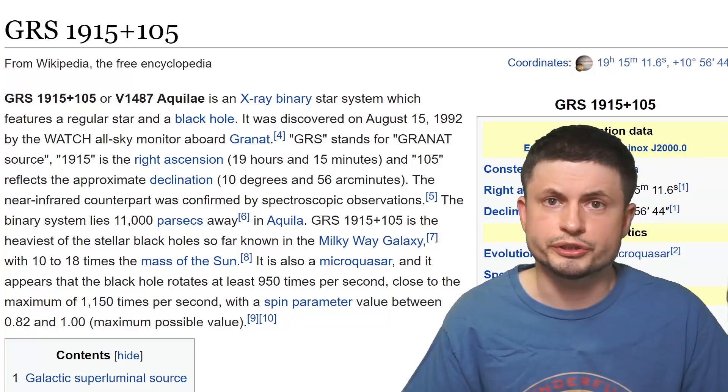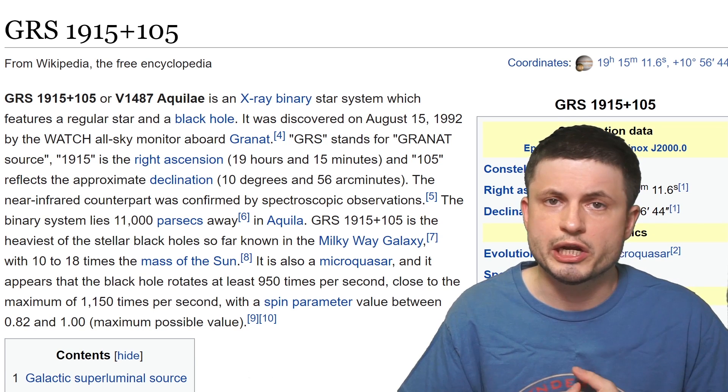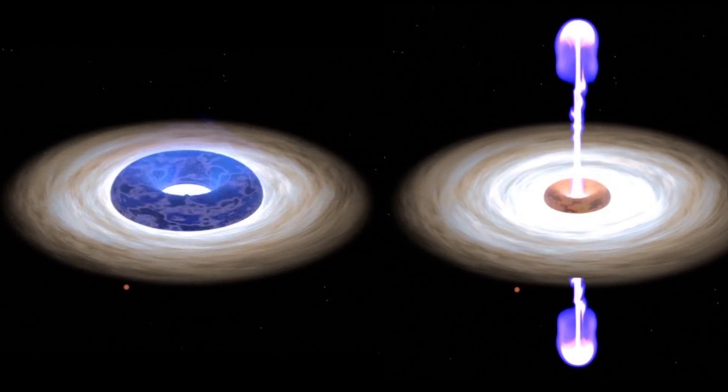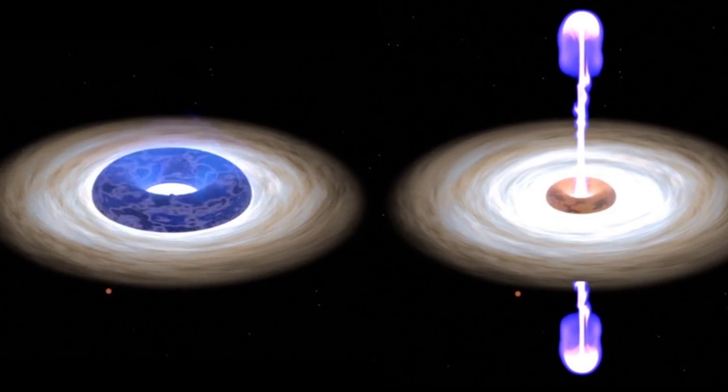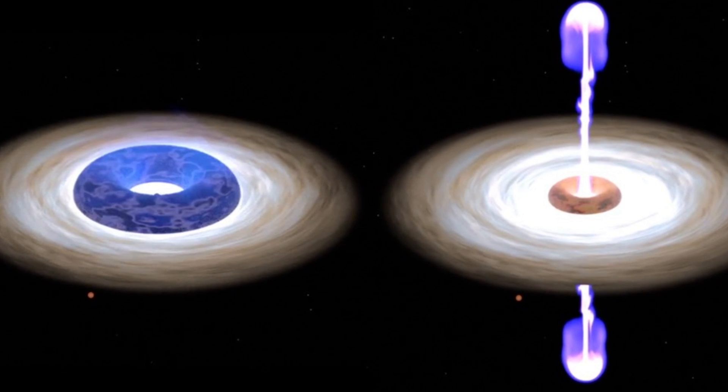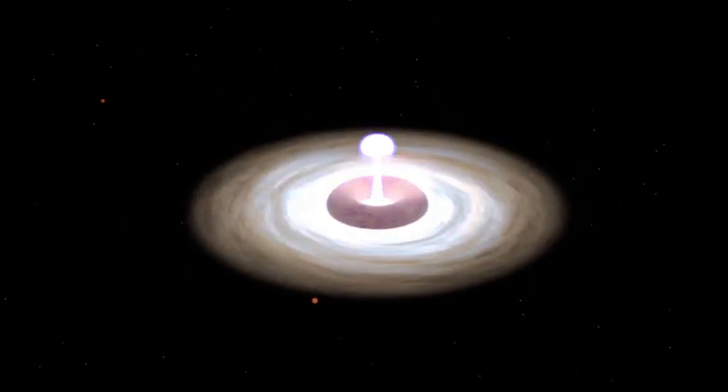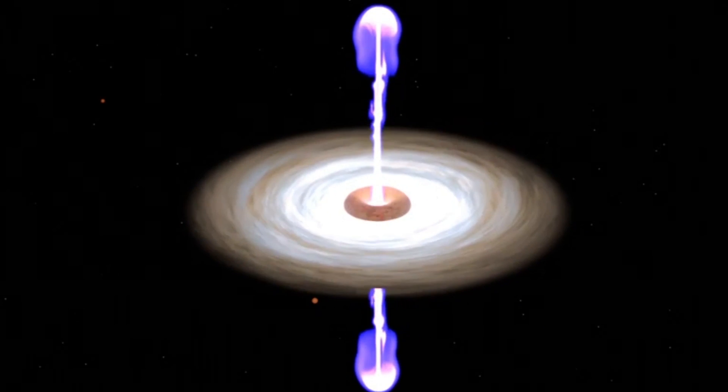But then we have this other object, also discovered nearly three decades ago, known as GRS-1915-105. Another microquasar located approximately 36,000 light years away from the sun, in this case also most likely possessing a black hole in the middle. And in this case the scientists actually wanted to directly explore what happens in the middle of these black holes, and how these unusual pulsations are generated, and what sort of activity is going on in order to create these very strange, very unusual and eerie observations. Here they actually looked at approximately 15 years of data, looking at a variety of light including the x-ray light, and of course the radio light emitted by the quasar.